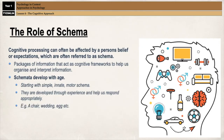For example, everyone has a schema of a chair. If you walk into a room and there's a chair in the middle of the room, your schema are going to tell you to sit on that chair because that's what the chair is for. Equally, even people who have never been to a wedding generally have a schema of what a wedding is, because through interaction with media or hearing about weddings, we are generally able to form a picture of what a wedding is in our minds. You might not know everything, but you have a general idea.